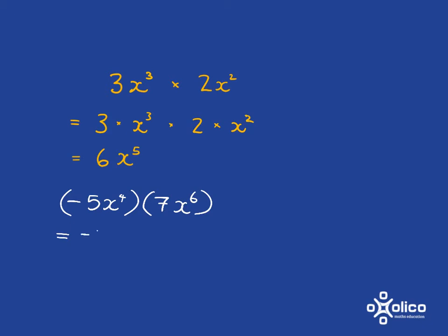That gives you negative 35. And x to the 4 times x to the 6. Well, you're going to have x to the 4 plus 6. So you're going to have x to the 10.